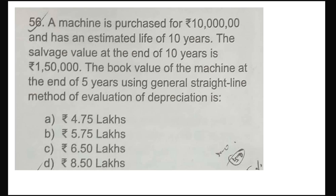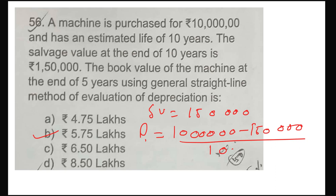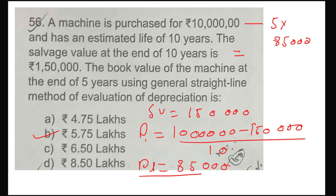The correct answer for the next question will be option number B. The book value is 5 lakhs — getting the point? It comes to 5.75 lakhs. So this answer is option number B, which is very easy.